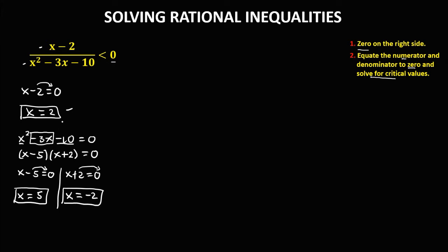So these are the three critical values. We place them on a number line: negative 2, positive 2, and positive 5, along with negative infinity and positive infinity.